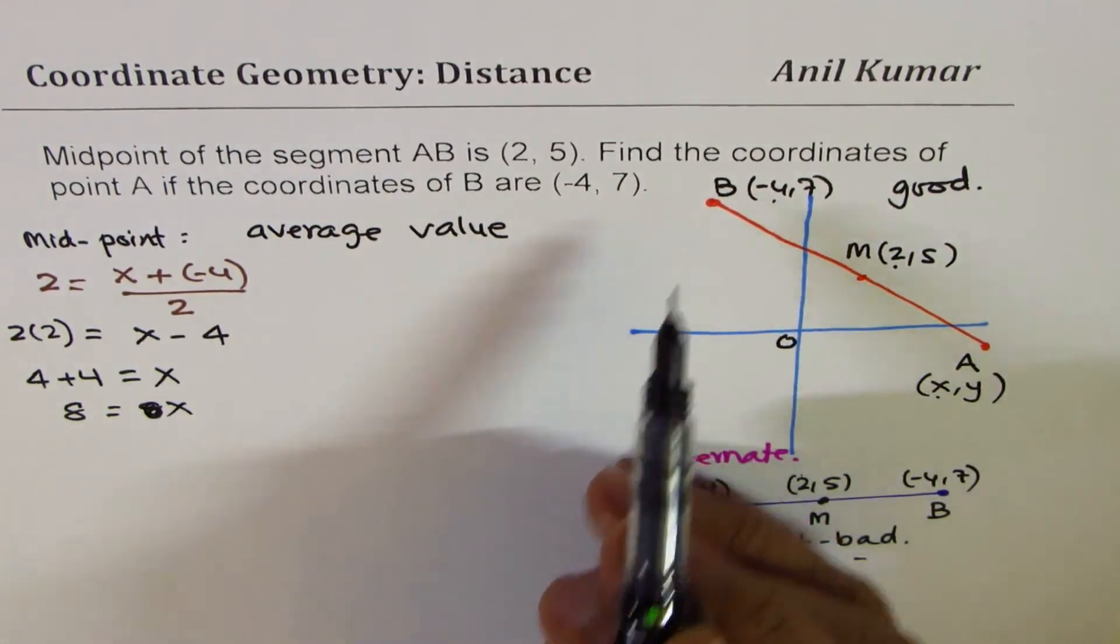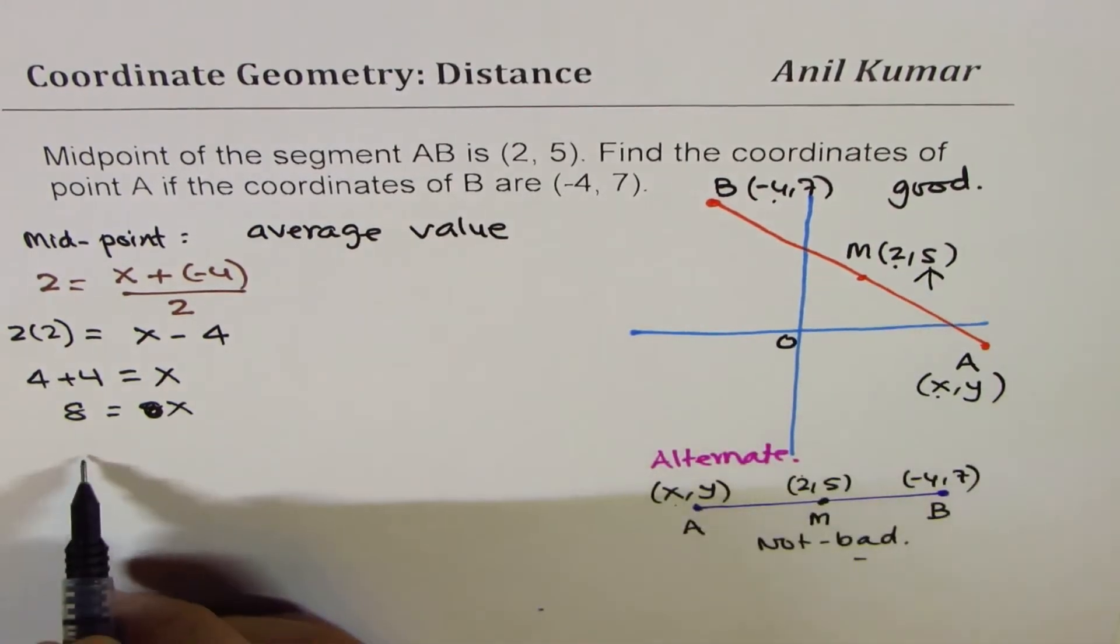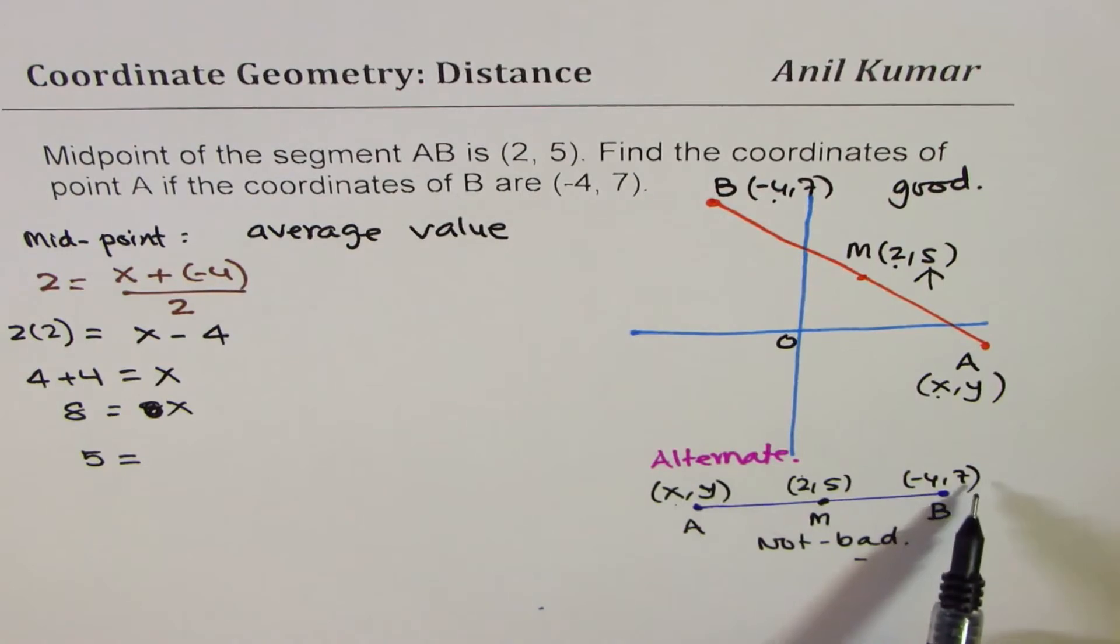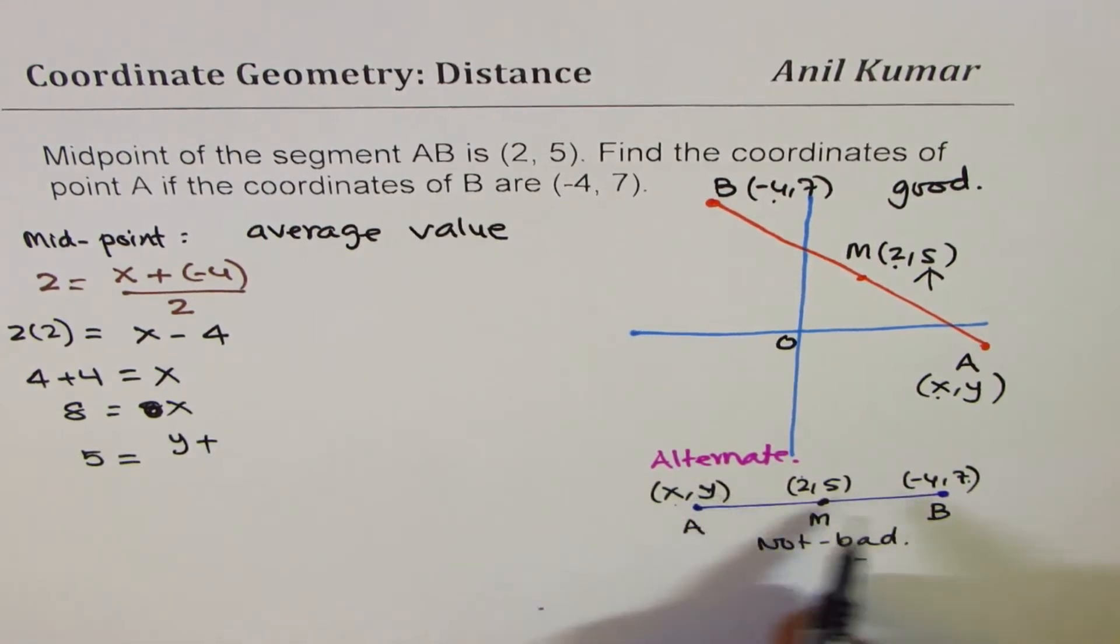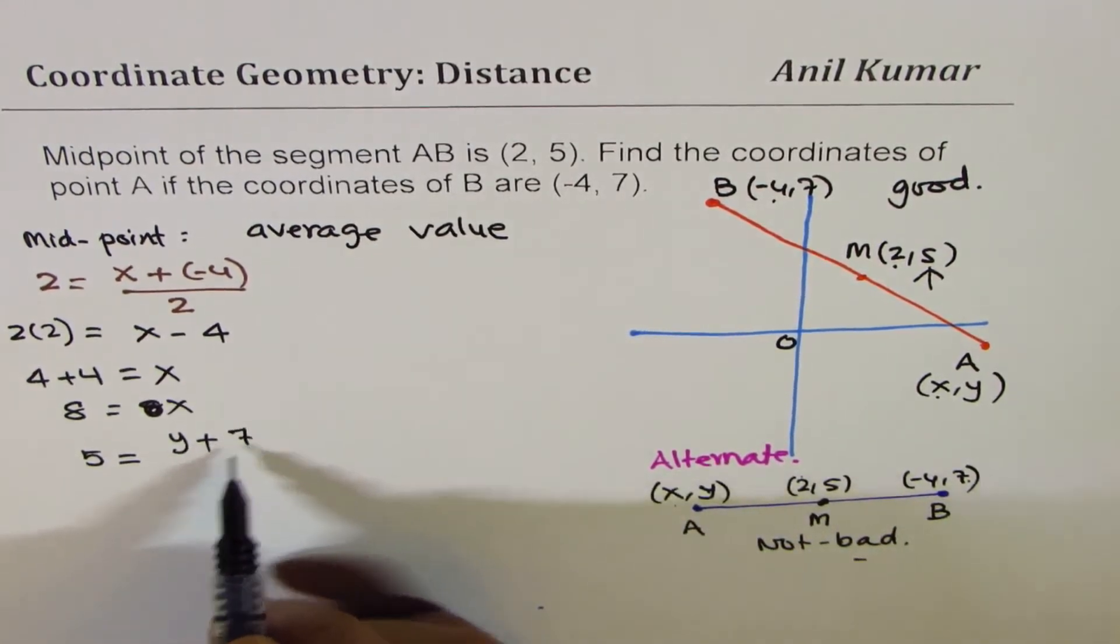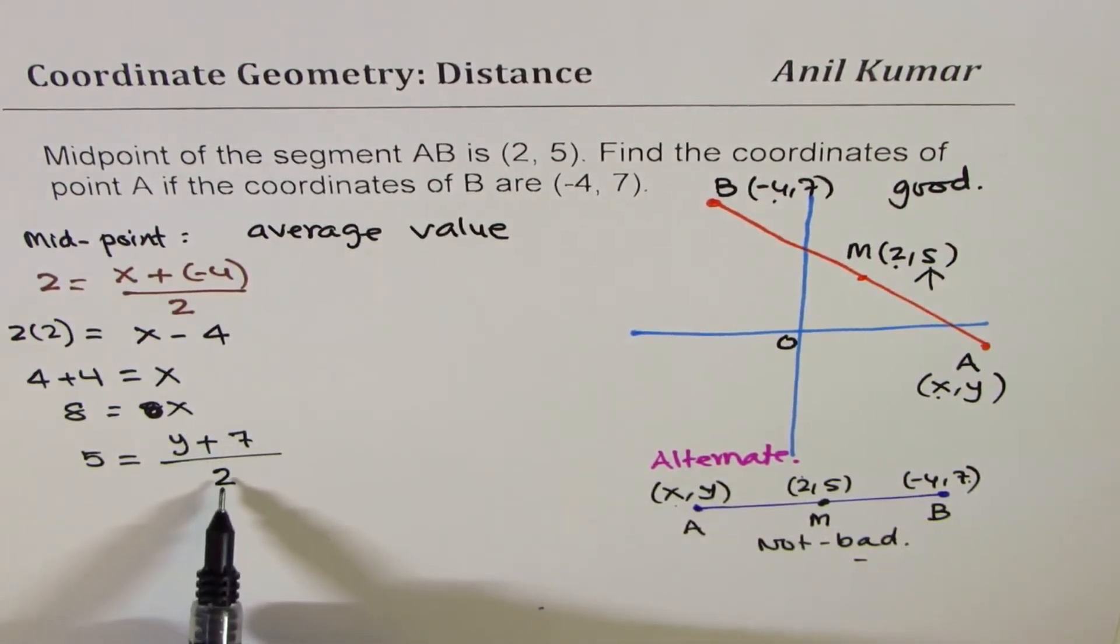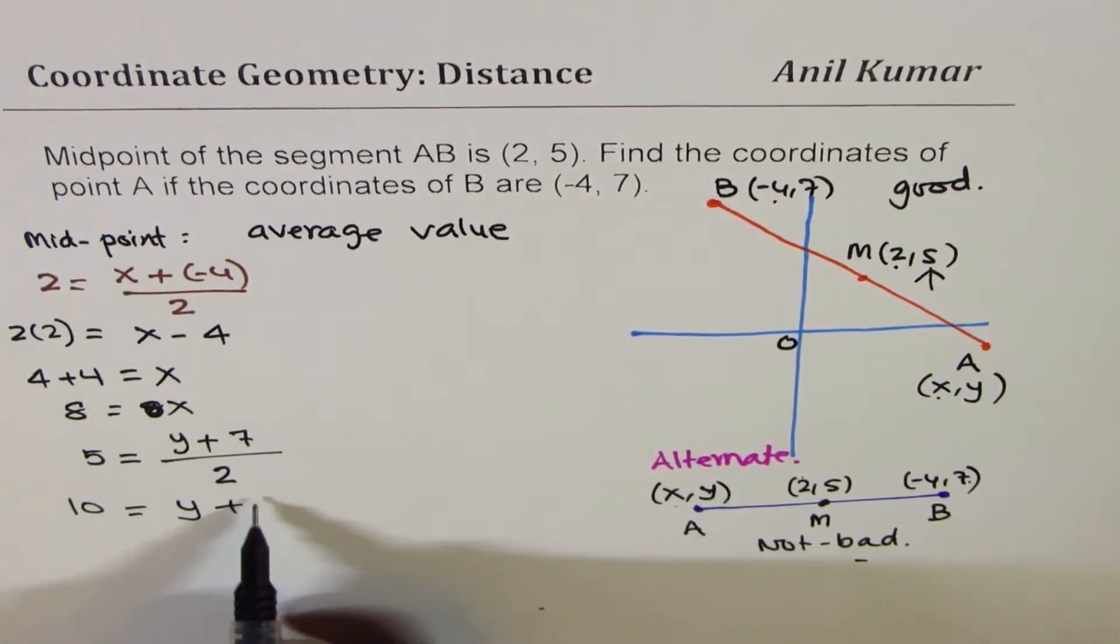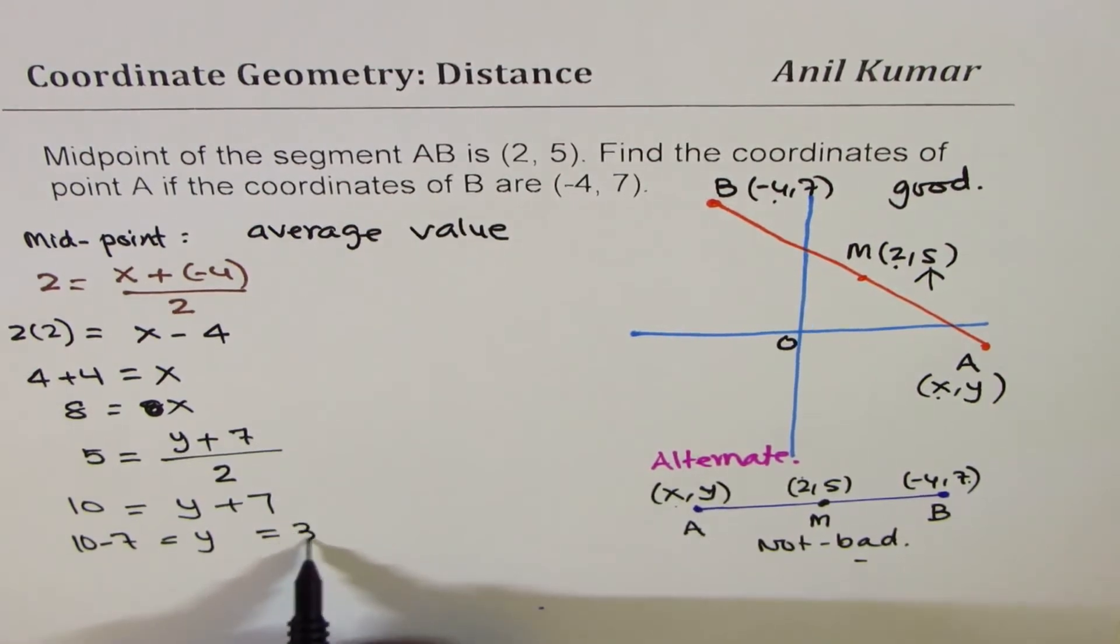Now let us find the y value. Y value, the midpoint is 5. So we'll write 5 equals average of these two. You could do these two or these two. One and the same thing. It is average of y and 7. So 5 equals to (y + 7) over 2. Now to solve for y, again cross multiply, get 10 equals to y + 7, or y equals to 10 - 7, which is equal to 3.